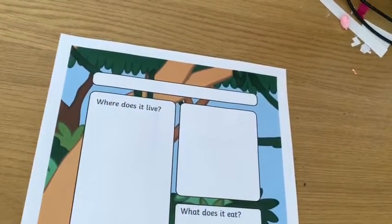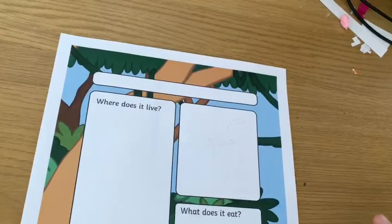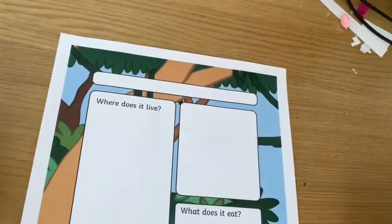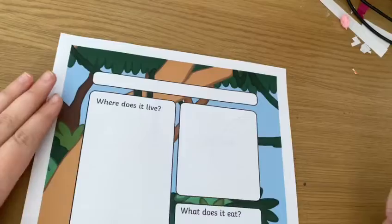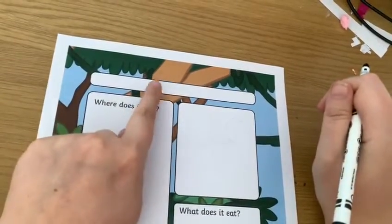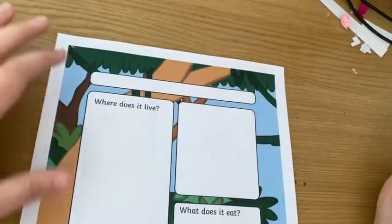Let's get started on making our fact file. The mini beast that I've chosen to create a fact file about is an ant. So I'm going to write 'ant' at the top here.